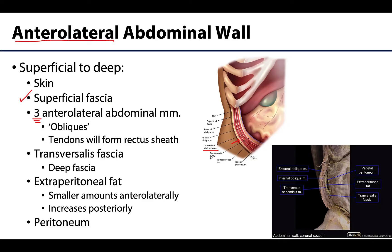Deep to these muscles is the transversalis fascia, which is essentially the deep fascia of the transversus abdominis, extending into the anterior region. Next is the extraperitoneal fat, a variably sized layer — typically smaller amounts in the anterior lateral portion, increasing more posteriorly. The deepest layer of the wall is the peritoneum.